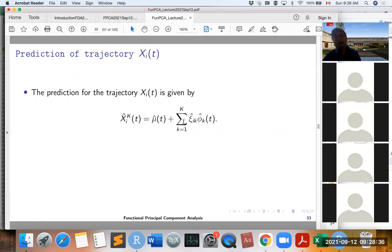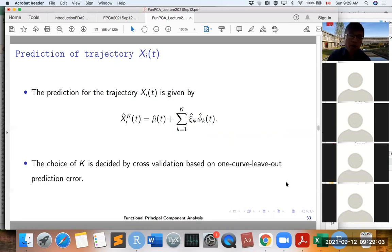So then we can predict the trajectory, the curve, using this formula. We know the mean function μ(t), we know the LPC function φ_k(t), and the LPC scores ξ_ik. So then we can predict the curve X(t) now. The choice of k is decided by cross-validation based on the LPC score out-of-sample prediction error.